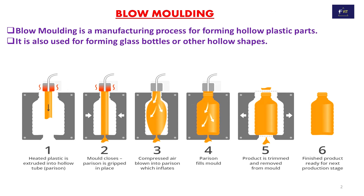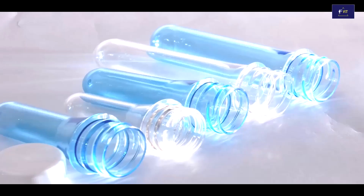Fourth, the parison fills the mold. Fifth, the product is trimmed and removed from the mold. Sixth, the final product is ready for the next production stage. These are the different steps of the blow molding process.